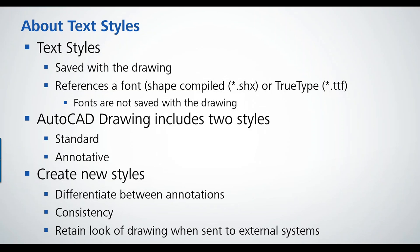In an AutoCAD drawing, when it comes to text and dimension styles — and table styles as well — you'll usually have two types already there: Standard and Annotative. Both styles are the same fundamentally. Standard is the older default, and requires more manual work when it comes to scaling. Annotative styles automatically scale depending on the scale factor of the view or model environment you're working in. We covered annotative styles and scaling in a previous webinar.